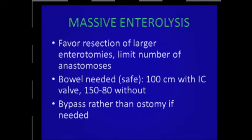If you get into the severely obese patient and have to do massive enterolysis, and wind up four to six hours later with about six enterotomies and beat-up bowel, the strategy really is to eliminate as many defects in the bowel as possible and limit the number of anastomoses. Remember your limits: at least 100 centimeters of viable bowel with an ileocecal valve, and 150 to 180 centimeters without. Don't be afraid to take out a little small bowel to get there. Prefer to bypass severe distal obstructions rather than do an ostomy.